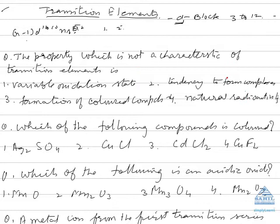All transition elements form complexes due to high charge to size ratio and presence of vacant d orbitals. Formation of colored compounds: since they have unpaired electrons, these electrons get excited from one d orbital to another, so they form colored compounds. Natural radioactivity is not a characteristic of these elements, some may show it but that's not a property. Hence the answer is fourth.